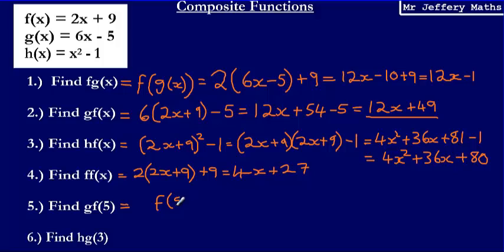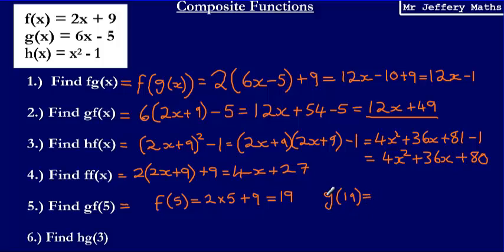First, we work out f(5): that's 2 times 5 plus 9, which gives 19. Then we take that answer and substitute it into g(x). So g(19) is 6 multiplied by 19 minus 5. 6 times 19 is 114, then take away 5 gives an answer of 109. You can see that gives exactly the same answer as substituting 5 into g of f of x, which was 12x plus 49.